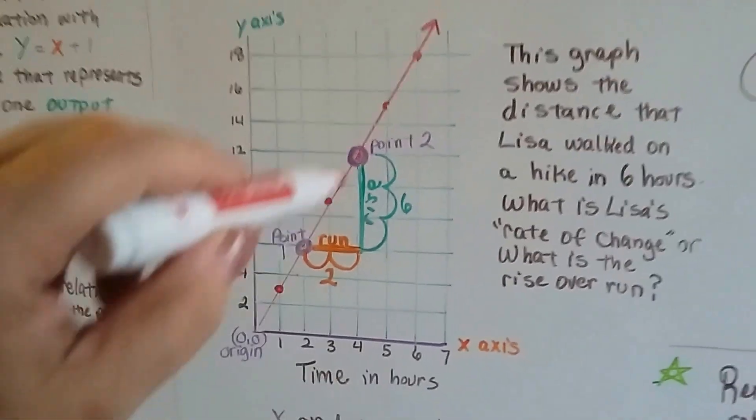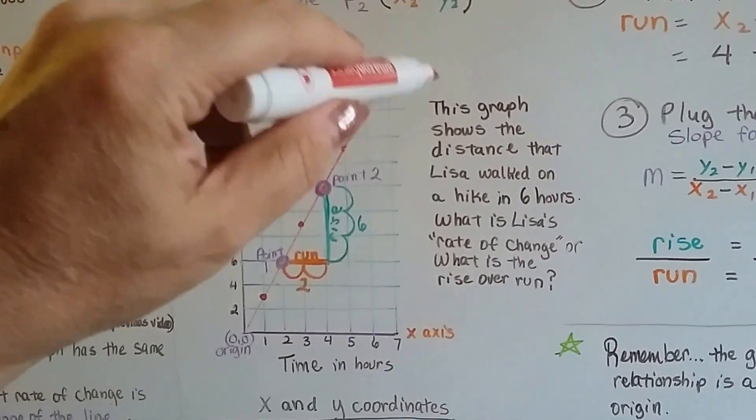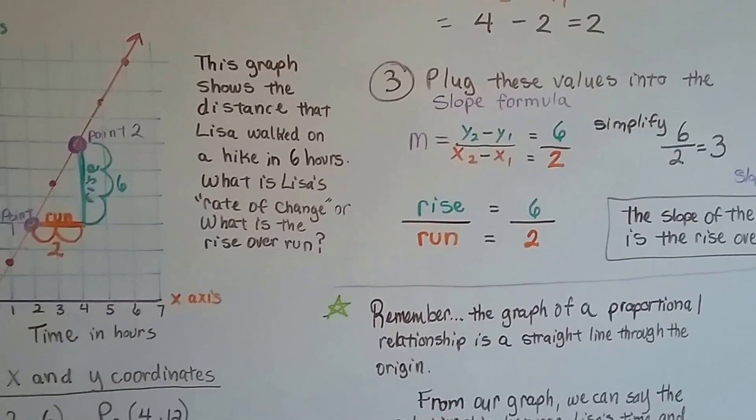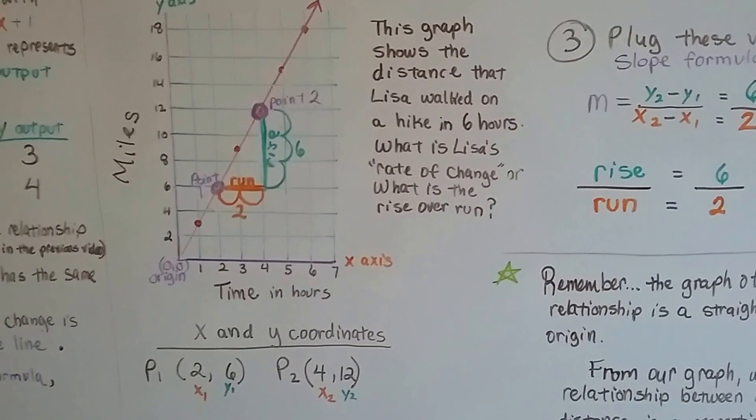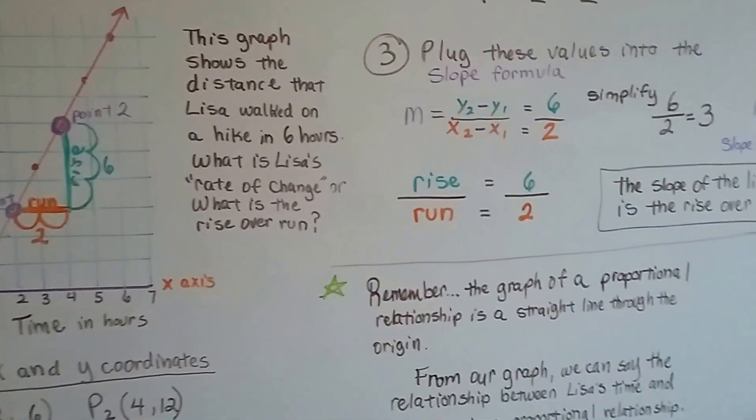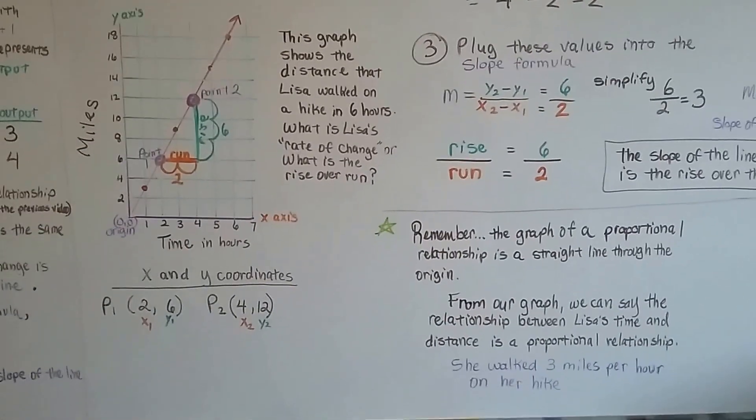And it really matters what direction the arrow is pointing. Because the arrow is pointing up towards the right in this direction, we've got a positive rise over run. If it's pointing this way, going up to the left, we're going to have a negative rise over run. We'll get into that in the future. But right now, you now know what a rise over run is.